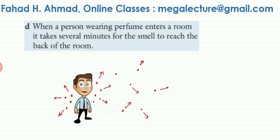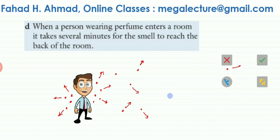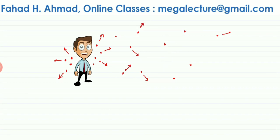The perfume particles randomly collide with air particles, moving in totally random directions. Eventually a particle ends up in a corner of the room after many collisions. Slowly and steadily the perfume particles mix with the air particles, collide with them, and continuously move until they eventually occupy the whole room — after several minutes the smell reaches the back.